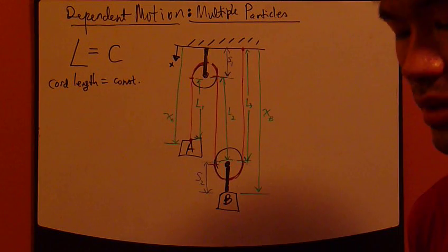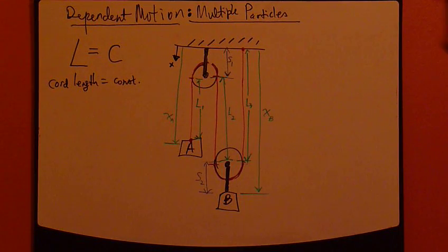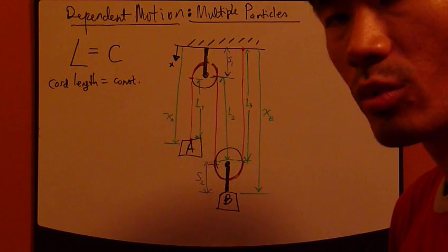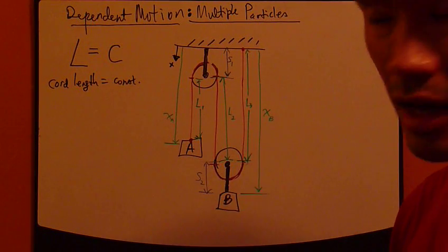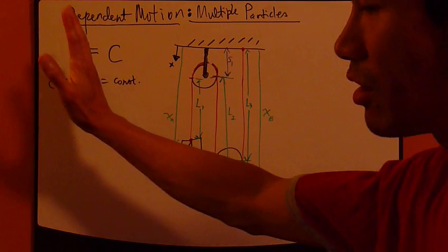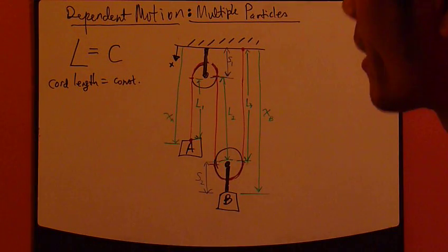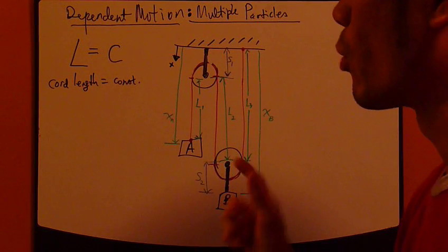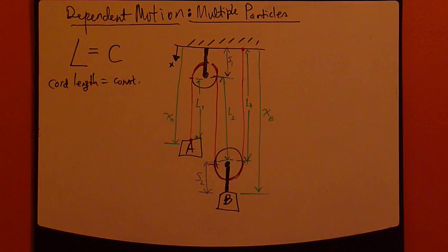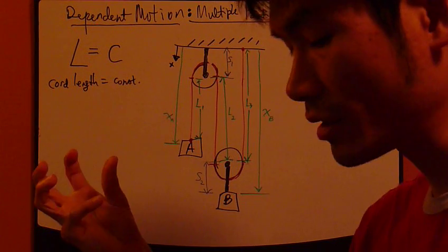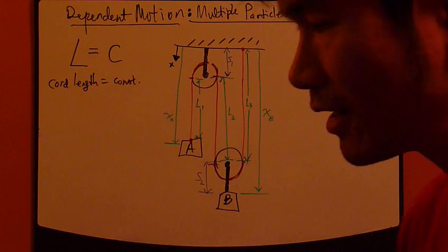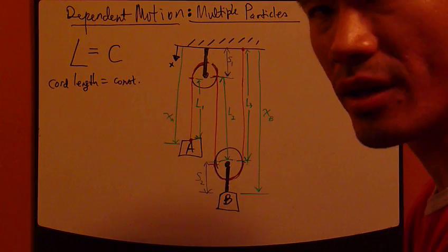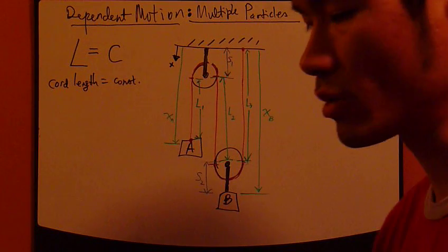Now, dependent motion means simply one particle is dependent on the other, and now we're concerned with multiple particles. Prior to this, we've only been looking at just one particle. In the case where we have more than one particle, what is the relationship between them? Knowing the velocity of one, can we know the velocity of the other? Actually, we can if they are attached to one another by a string or a chord.